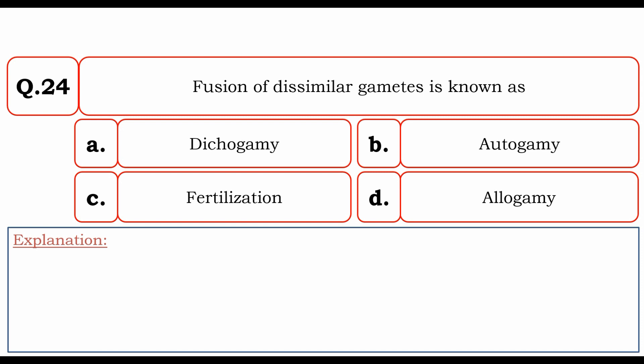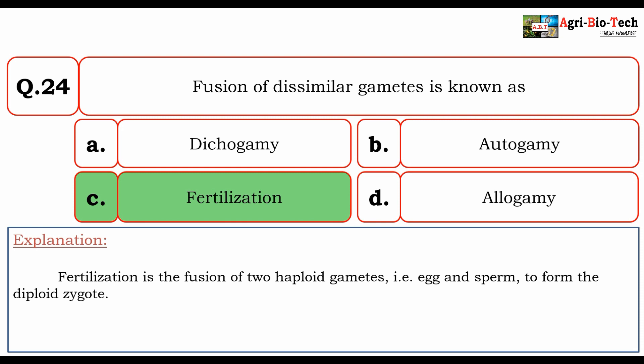Fusion of dissimilar gametes is known as: A. dichogamy, B. autogamy, C. fertilization, D. allogamy. The correct answer is C. fertilization. Fertilization is the fusion of two haploid gametes — egg and sperm — to form the diploid zygote.